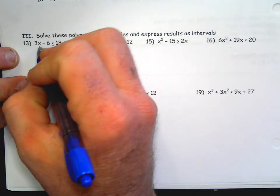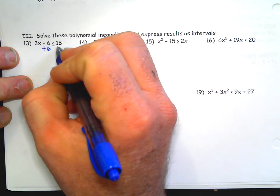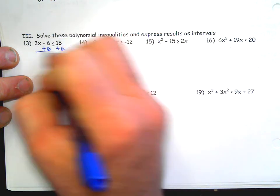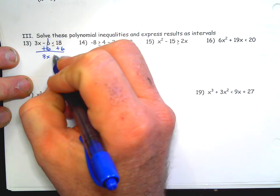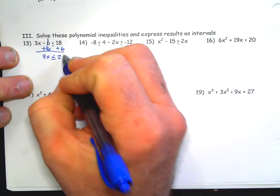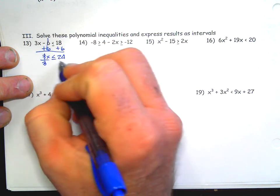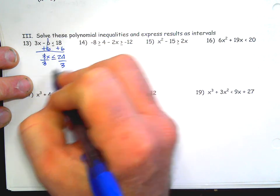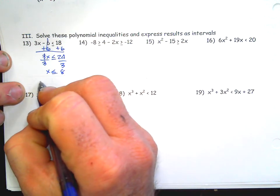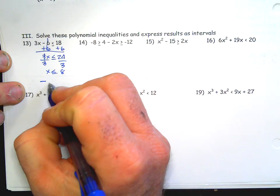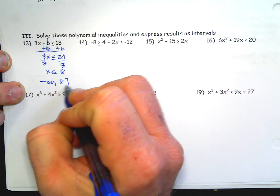For linear inequalities, you can just get x by itself and everything works out nicely — you don't need to do a number line check for that. In interval notation, that would be negative infinity to 8 with a bracket.